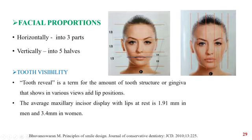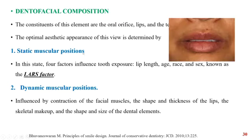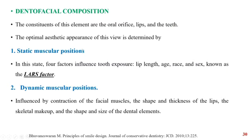Tooth visibility is the term for the amount of tooth structure or gingival display shown in various lip positions. The average maxillary incisal display at rest is 1.91 mm in males and 3.4 mm in females. The constituents of the dentofacial composition are the oral orifice, the lips, and the teeth. It involves two positions: the static muscular position and the dynamic muscular position. In the static muscular position, four factors are involved: lip length, age, race, and sex. In the dynamic muscular position, it is influenced by contraction of the facial muscles, shape and thickness of the teeth, and the skeletal makeup of the individual.